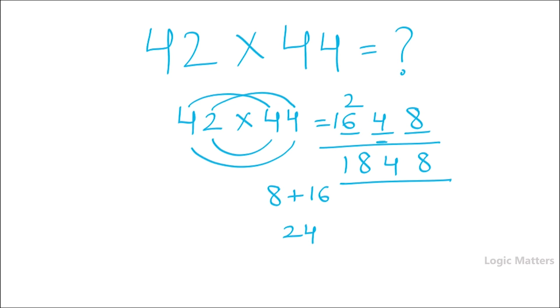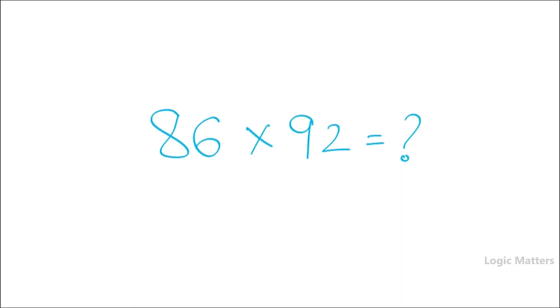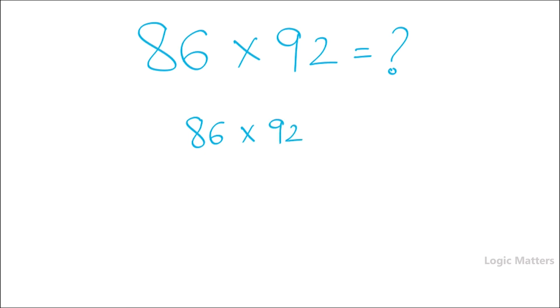So now let's try with another number: 86 multiplied by 92 is equal to how much? Now let's take down the number. 86 multiplied by 92 is equal to, same three positions.